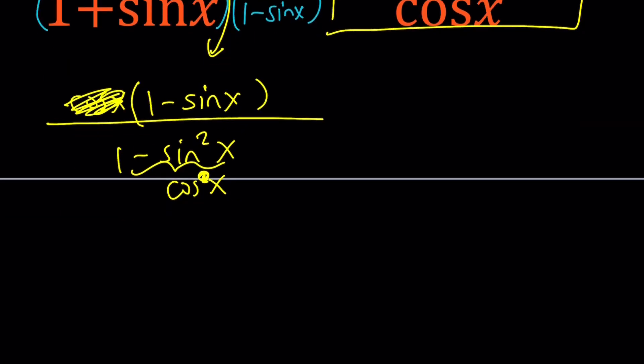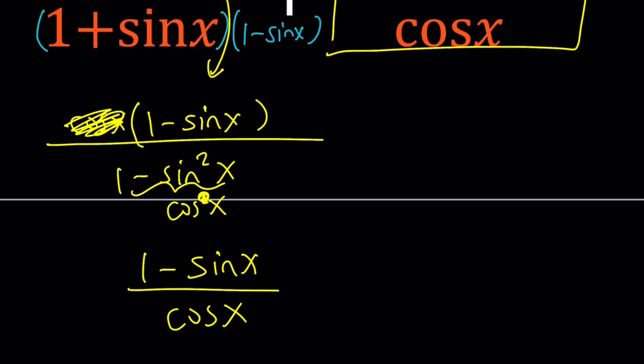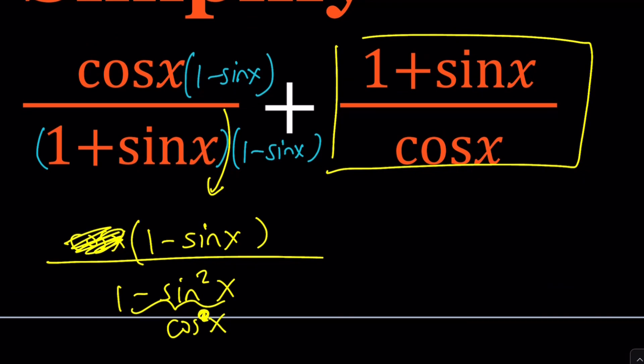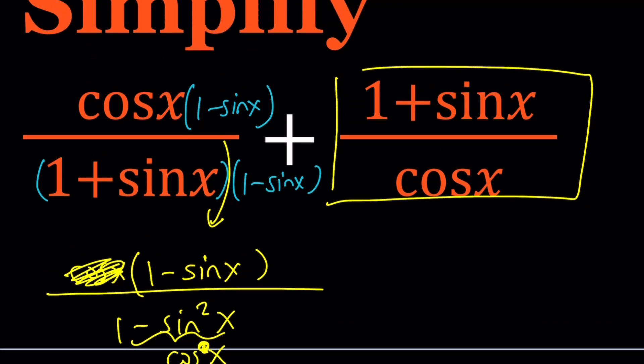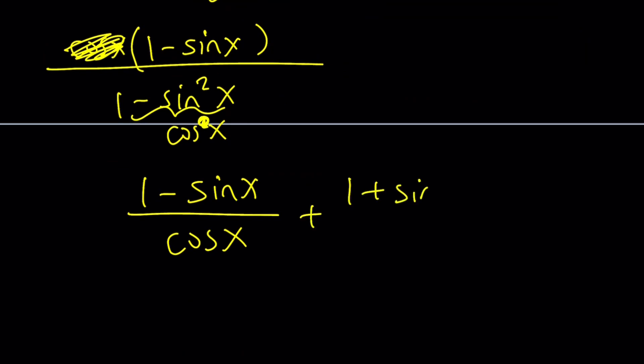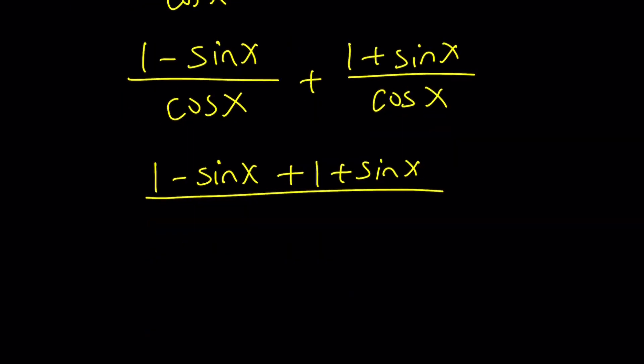And guess what this gives you? 1 minus sine x divided by cosine x, which is interesting, right? So those two expressions are equivalent. So now we can add the second part, which is 1 plus sine x divided by cosine x. And then, since I have a common denominator, I can go ahead and add the numerators. And if I do, I get 1 minus sine x plus 1 plus sine x all over cosine x. And notice that sine x and negative sine x are opposites, and they cancel out.